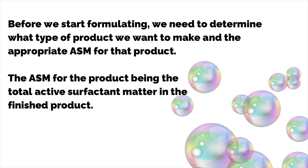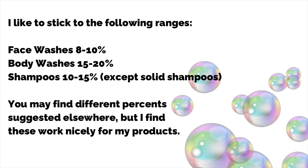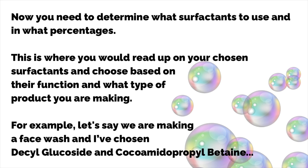I like to stick to the following ranges: face wash 8–10%, body washes 15–20%, shampoos 10–15% — except for solid shampoos, but that's another topic. You may find different percentages suggested elsewhere, but I find these work nicely for my products.